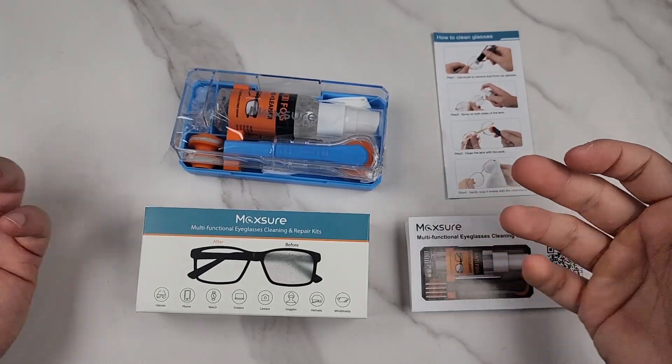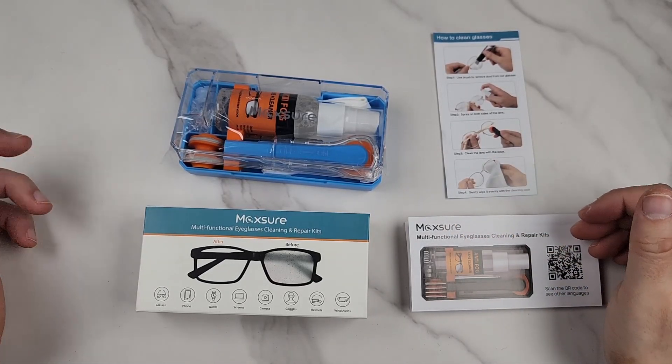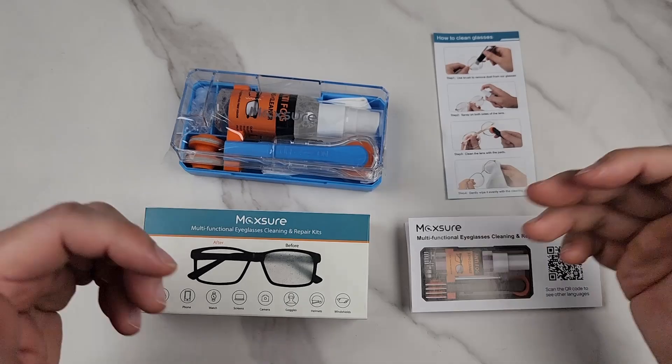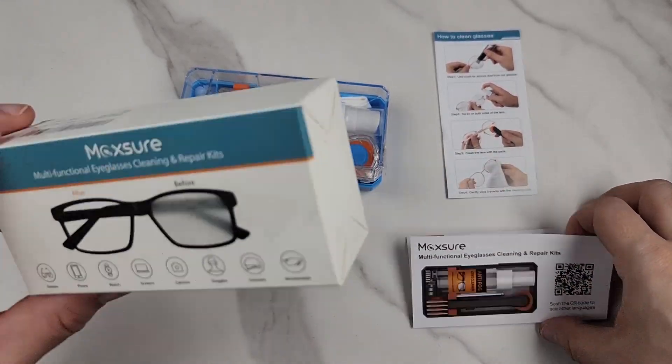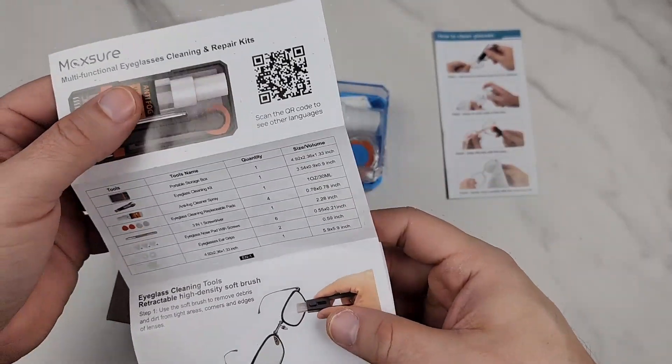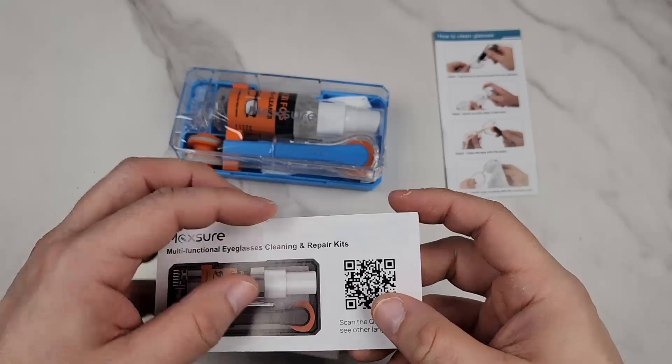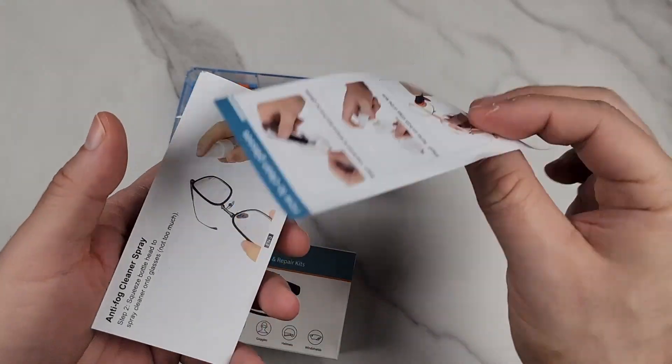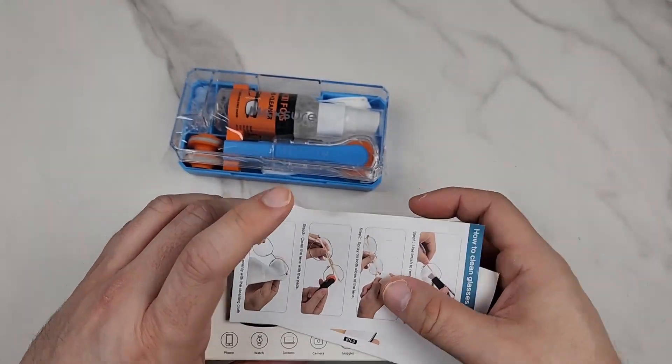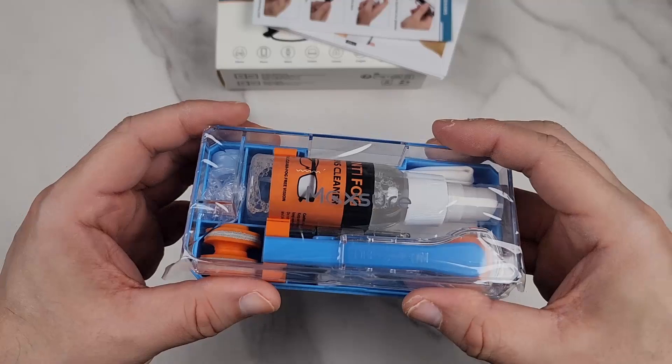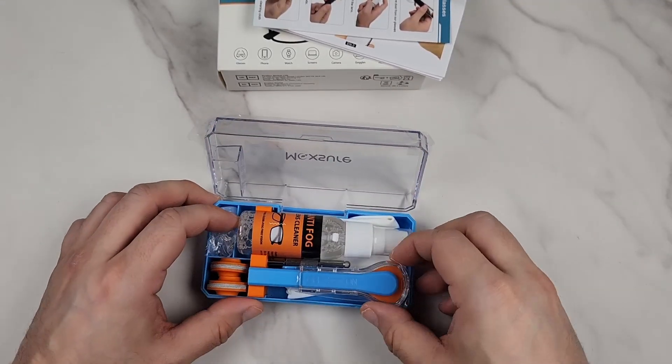This is the 8-in-1 sunglasses or glasses cleaner kit. This is a complete set. Here's the box with instructions for all the pieces and how they work. The spray is real easy to understand. It comes in a nice case.